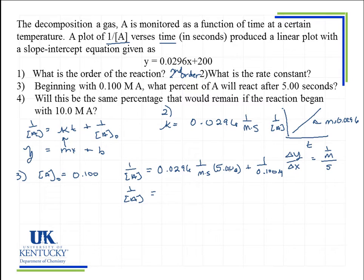This will give me 1 over A. If we multiply this out and add this number here, we get a value of 1 over A equal to 10.148. So A would be the reciprocal of that, which is 0.0985.